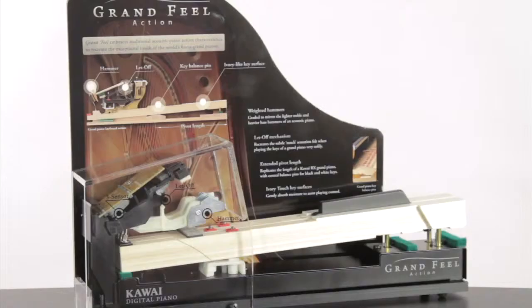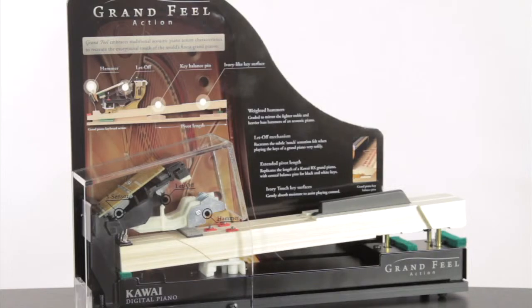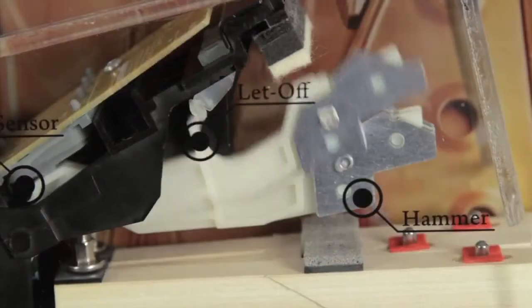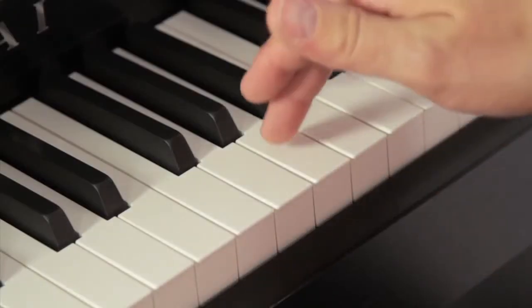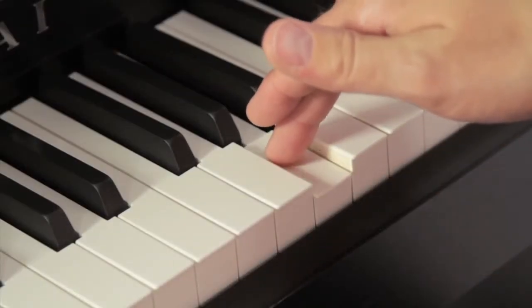Sin olvidarnos de la superficie Ivory Touch, que absorbe la posible humedad de los dedos del pianista. El CA95 incluso dispone de macillos reales que golpean una cuerda virtual en el interior del instrumento.